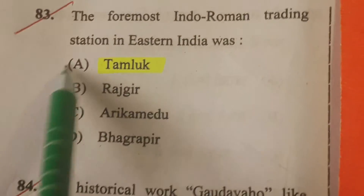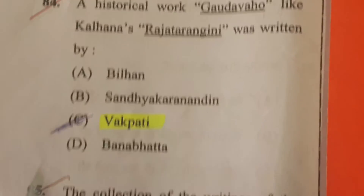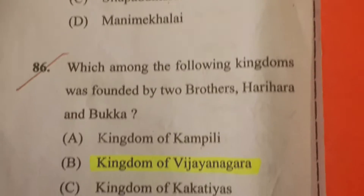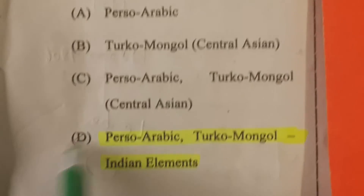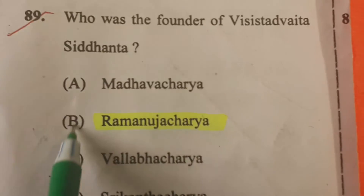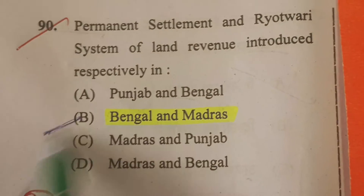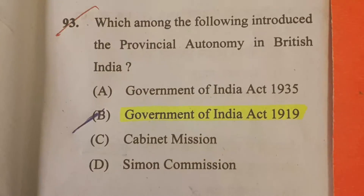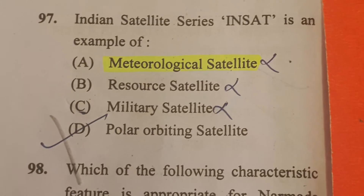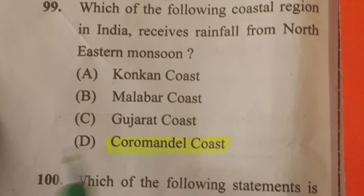83, A. 84, C. 85, A. 86, B. 87, A. 88, D. 89, B. 90, B. 91, all options are incorrect. 92, B. 93, B. 94, B. 95, B. 96, D. 97, A. 98, D. 99, D. 100, D.